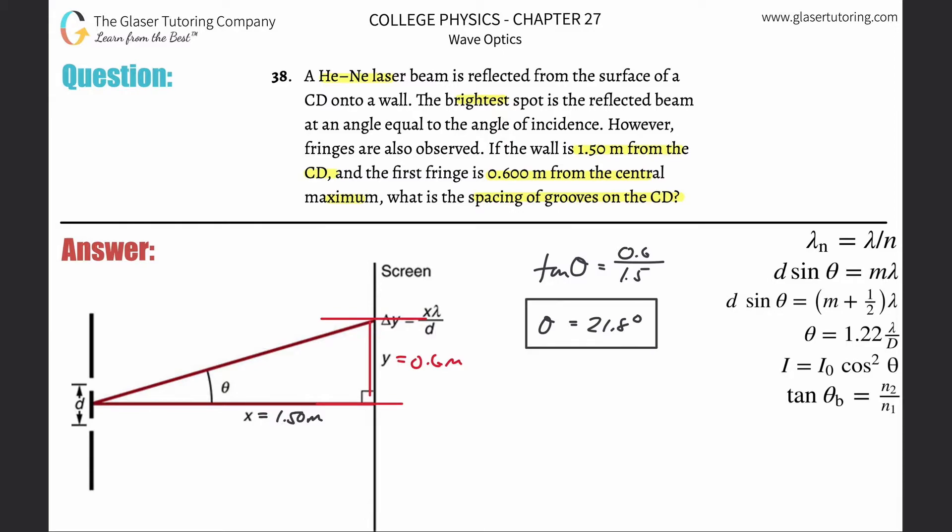Now that angle helps us use the constructive formula here to then calculate the d, because that's what they're asking for, the spacing of the grooves. So d sine theta will be equal to m times the wavelength. To find d, just simply divide out sine of theta from both sides. Clean it up a little bit. And now all we need to do is plug in the numbers.